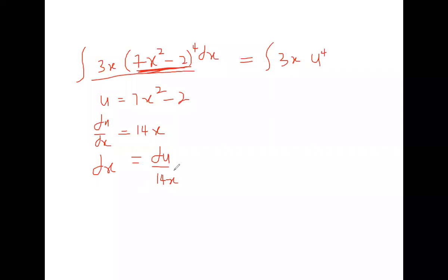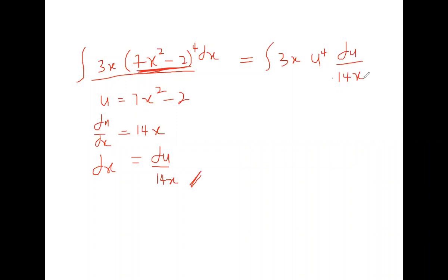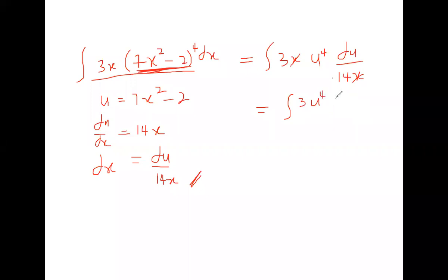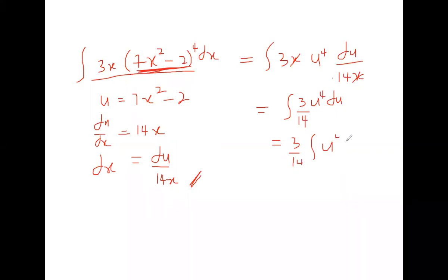Substituting: ∫3x · u⁴ · du/(14x). Clearly this x cancels the x, leaving only terms of u: ∫3u⁴ du/14. Bring the constant 3/14 out, then integrate u⁴ to get u⁵/5. So the result is (3/14)·(u⁵/5) + C.